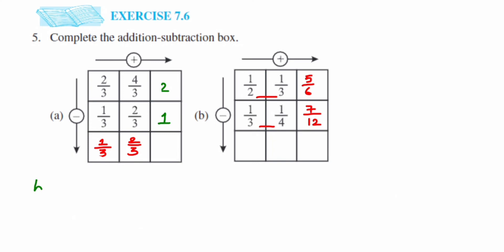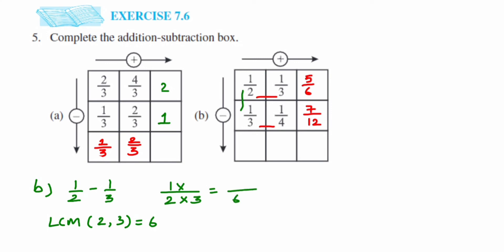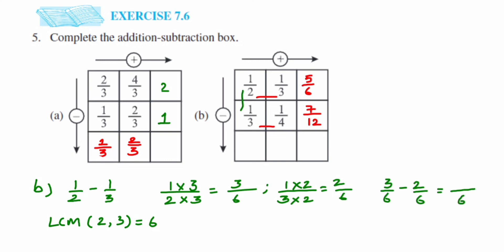Now subtraction for the second box: 1/2 minus 1/3. The LCM of 2 and 3 is 6, as before. For 1/2, multiply by 3 to get 3/6. For 1/3, multiply by 2 to get 2/6. Subtracting: 3/6 minus 2/6 — 3 minus 2 equals 1. The answer is 1/6.